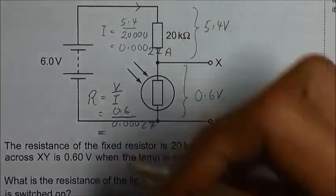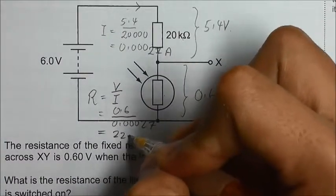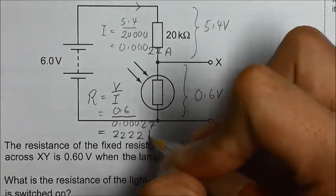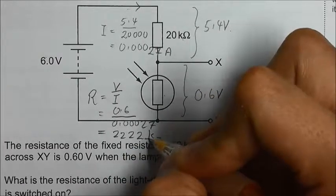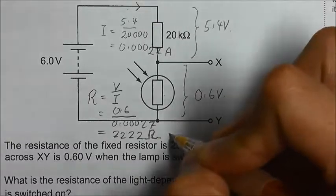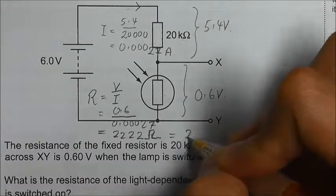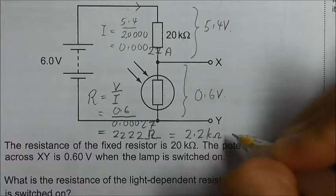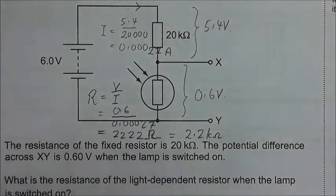We will get 2222 ohm. When we change it to kilo ohm, we will get about 2.2 kilo ohm. So the answer should be B.